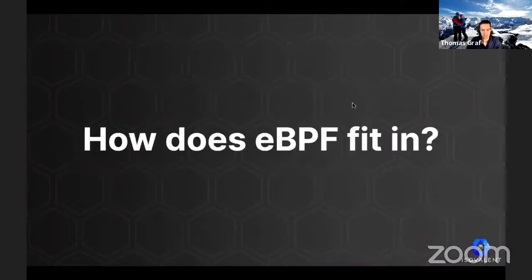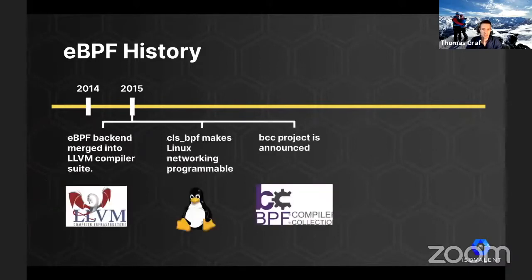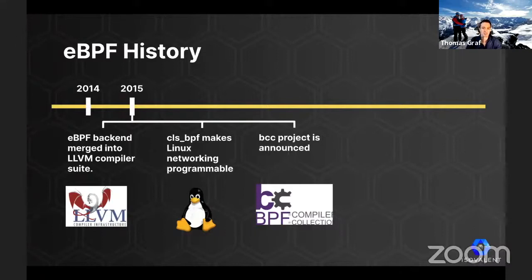So how does eBPF fit in? In the same year that Kubernetes started, eBPF was first merged into the Linux kernel. And just one year later, the eBPF backend was merged into the LLVM compiler suite, allowing LLVM to emit eBPF bytecode. Also, a new eBPF classifier made Linux networking programmable with eBPF for the first time. And finally, the BCC project was announced, which would later revolutionize application profiling and tracing. And now, as we see, eBPF Trace is succeeding BCC as well.